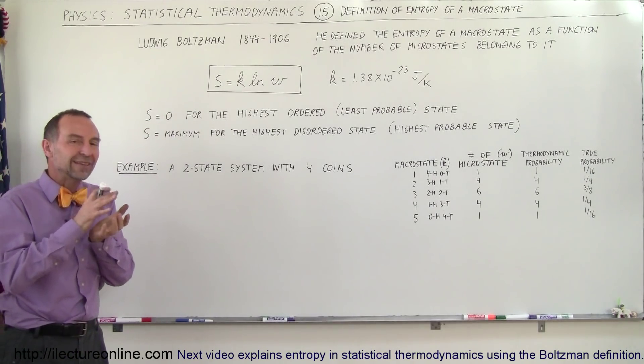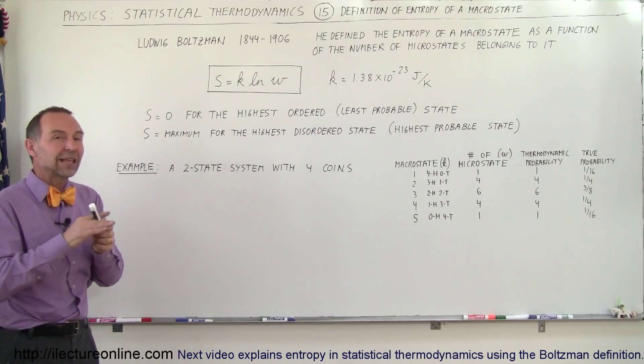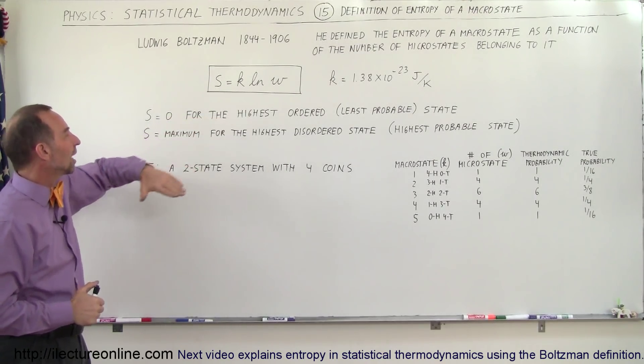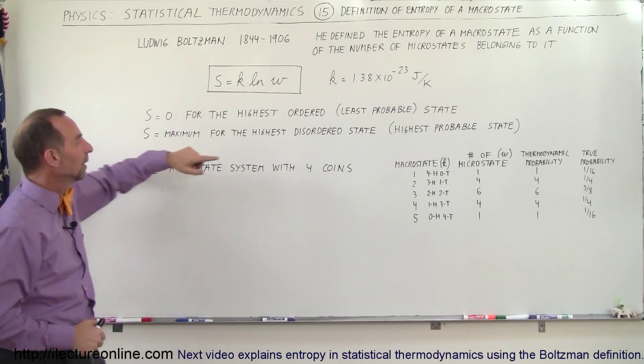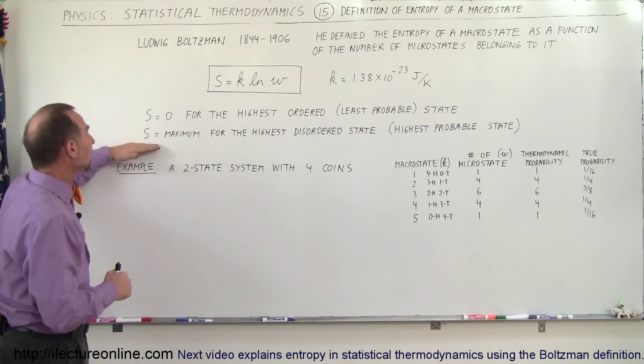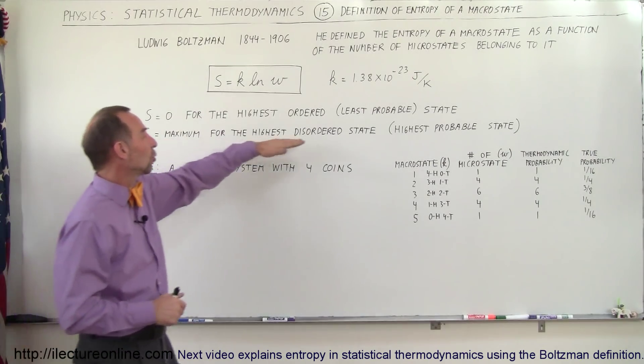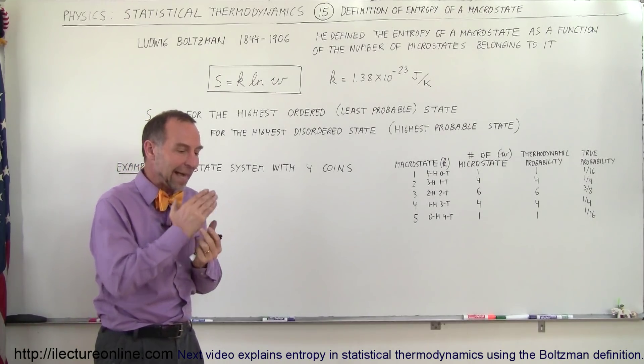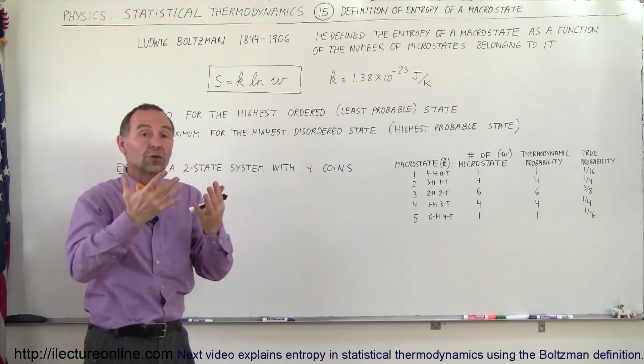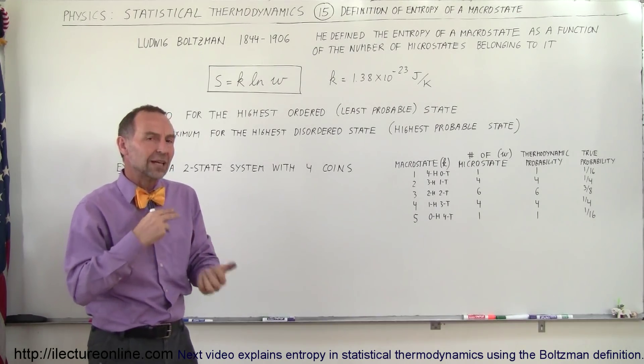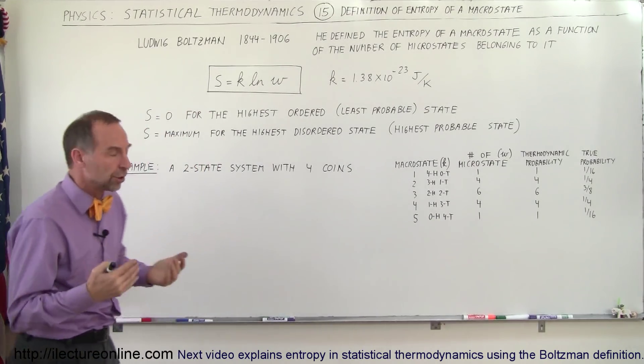So when S is zero and has its lowest value that's when we have the highest ordered state. For the highest ordered state, S equals zero and that is the least probable state. And entropy will be a maximum value for the highest disordered state when it's the highest probability state. Entropy goes up as disorder increases. Entropy goes down as order increases. So it's kind of inversely proportional to the order.